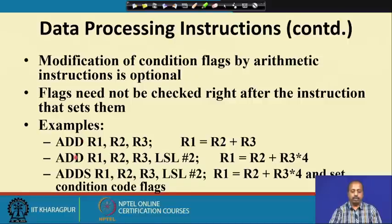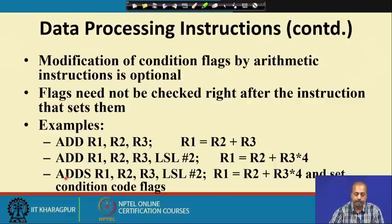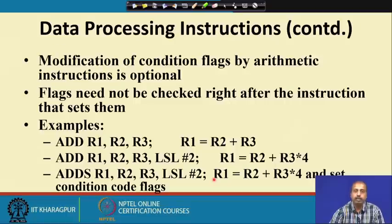These two ADD instructions do not affect the status flags or condition flags. But the instruction ADDS R1, R2, R3 LSL #2 will perform the same operation — R1 = R2 + (R3 × 4) — but at the same time it will set the condition flags. Depending on the result, if the result becomes 0 the zero flag is set. The NZCV flags will get affected.